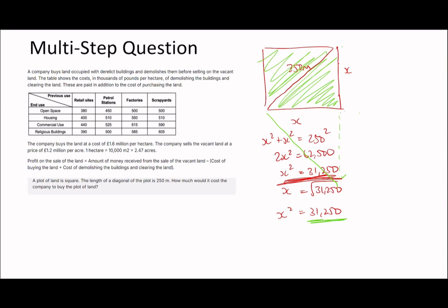So we have 31,250 m². To buy the land at £1.6 million per hectare, first convert: 31,250 divided by 10,000 gives 3.125 hectares. Then 3.125 times £1.6 million equals £5 million. Getting a nice round number after what look like complicated calculations is always a good sign.